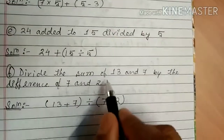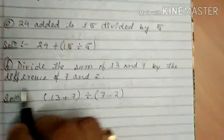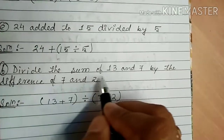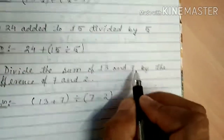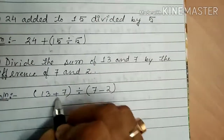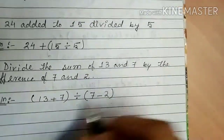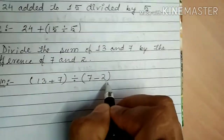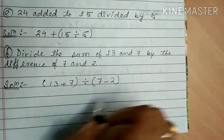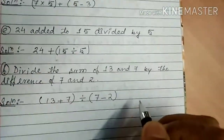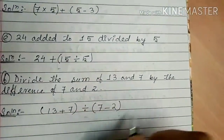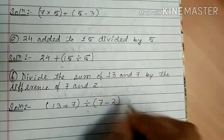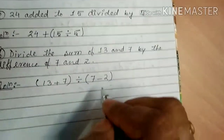Fifth: 'Divide the sum of 13 and 7 by the difference of 7 and 2.' You have to first find the sum: 13 plus 7. And then divide that by the difference of 7 minus 2. So the expression is (13 plus 7) divided by (7 minus 2). You just have to write the expression, not the solution.